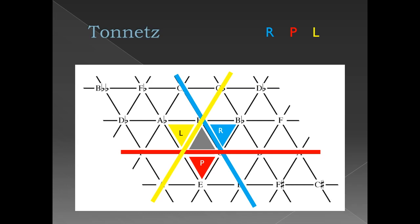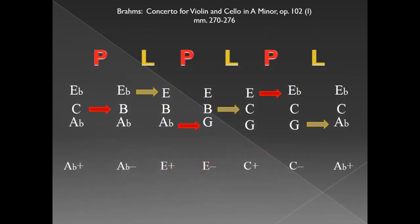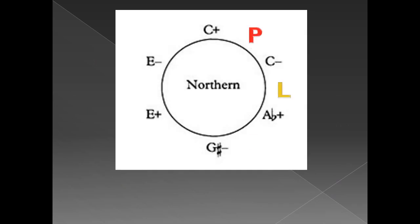Recall that P and L were found in our opening Brahms example. Each L transformation moved the chord root down by a major third. We can arrange these triads into a circle such as this to better visualize their relationships. We refer to this circle as a hexatonic cycle.